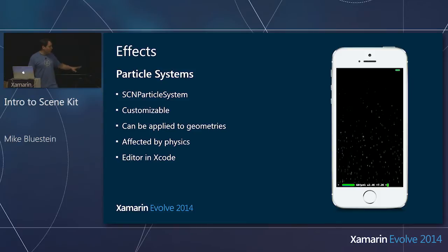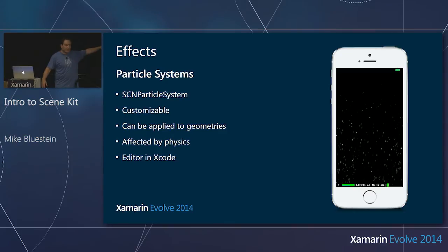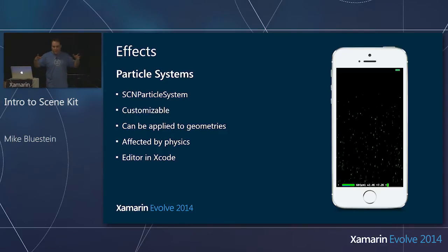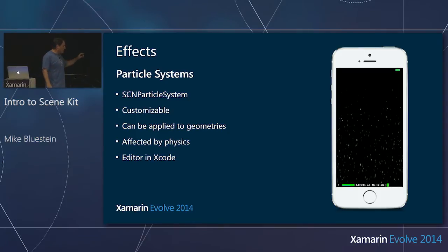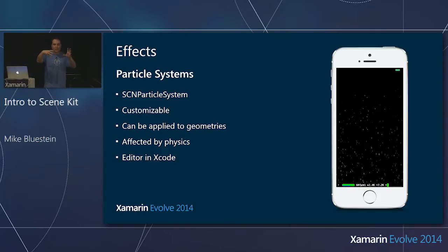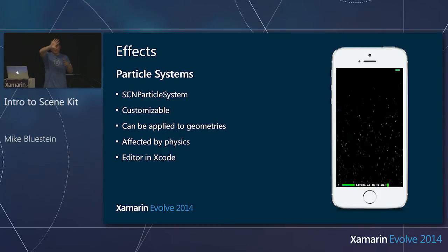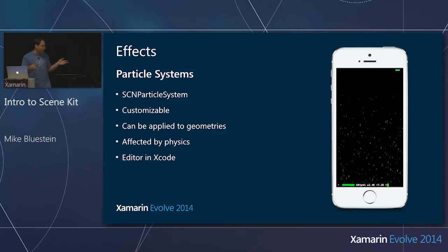They've built a class called SCNParticleSystem. It's very customizable: emission rates, colors, and all kinds of options. Particle systems can be applied to geometry — say I have a sphere or a cube — I can have the particle system layered onto the surface of the geometry, like you could do with a shader in OpenGL, but without all that complexity.